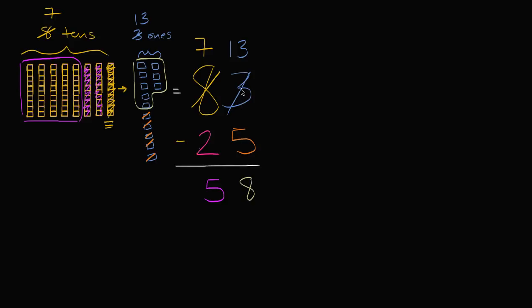So that three became, instead of having three 1s, we have 13 1s. And we took those 10 from, or we took one 10 from the 10s place in order to do that.